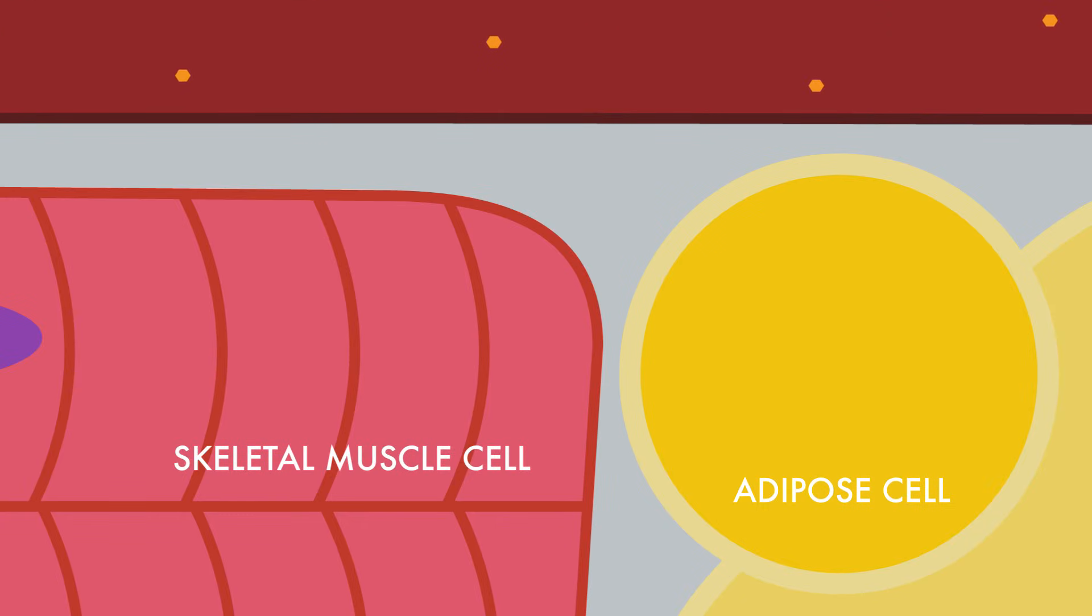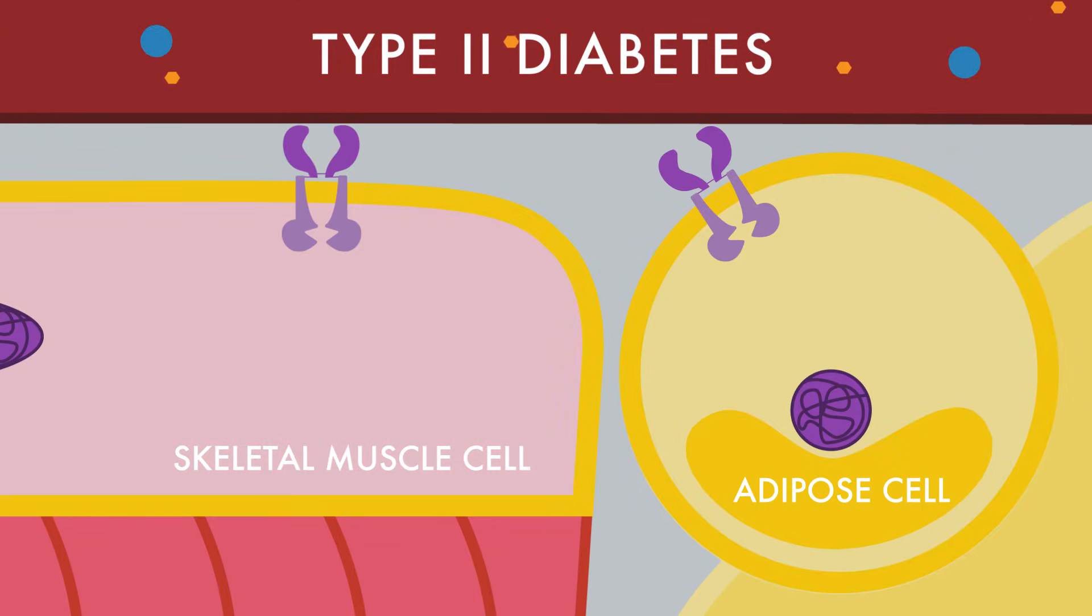Type 2 diabetes occurs when insulin receptors no longer respond to insulin, resulting in elevated blood glucose levels, among other symptoms.